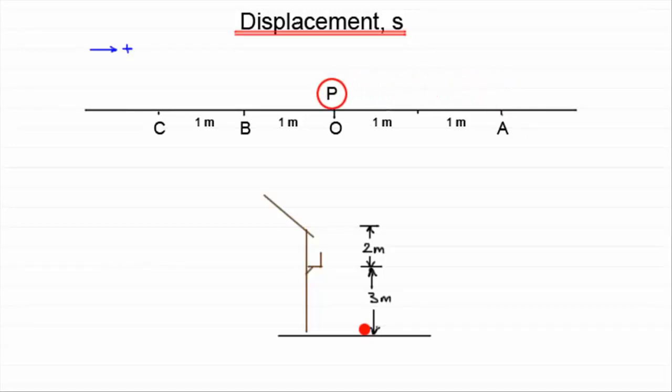Whereas if we go back to O again and move towards B, its displacement is minus 1 unit, minus 1 meter.